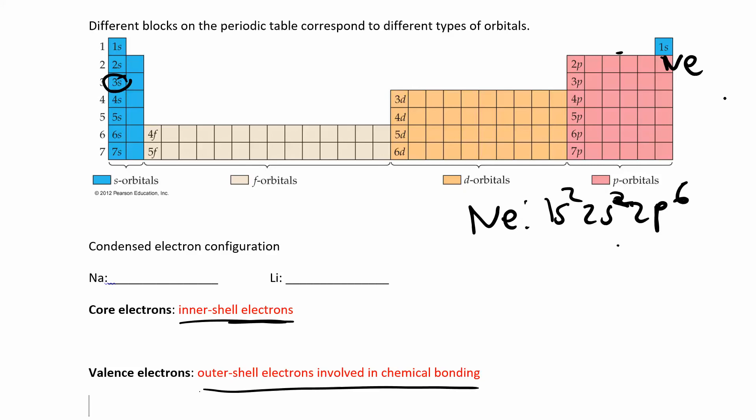Now, sodium is down here, which looks a lot like neon. 1s2, 2s2, 2p6, and then a 3s1. So those are the valence electrons in sodium. Sodium has one valence electron. And the electron configuration is very similar to neon. This all looks just like neon. So the condensed formula would look like bracket neon and then 3s1. And it's got one valence electron there.